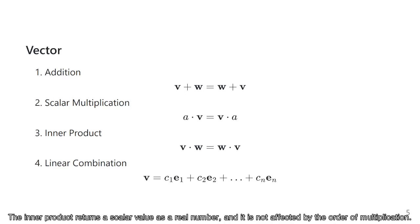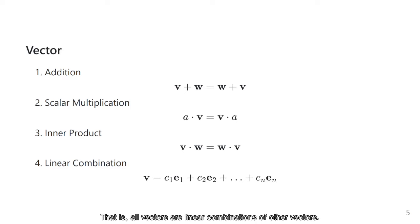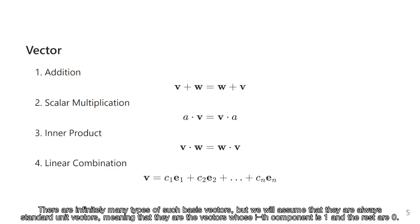The inner product returns a scalar value as a real number, and it is not affected by the order of multiplication. The fourth axiom — strictly speaking, not an axiom, but a result derived from the first and the second axioms — states that all vectors are a linear combination of other vectors. Here, e1 through en represent the basis vectors. There are infinitely many types of such basis vectors, but we will assume they are always standard unit vectors, meaning the vectors whose i-th component is 1 and the rest are 0.